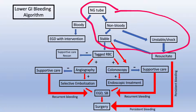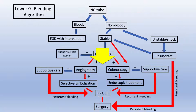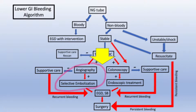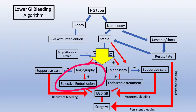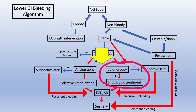Historically, tagged red blood cell scans have been done, but this has largely been replaced by colonoscopy and angiography. To enable a colonoscopy, a prep should ideally be done, as finding bleeding in an unprepped colon is challenging. If a prep is not possible, angiography should be performed with selective embolization. If the patient can undergo a prep, a colonoscopy with endoscopic treatment should be done.